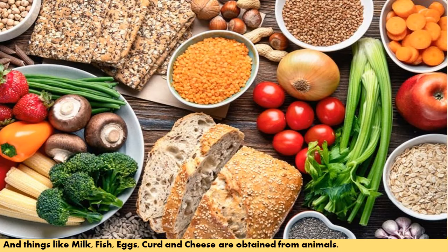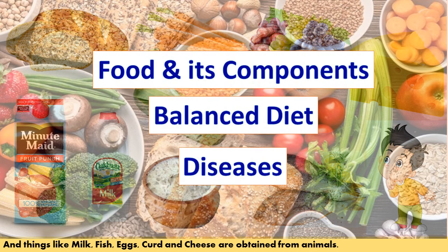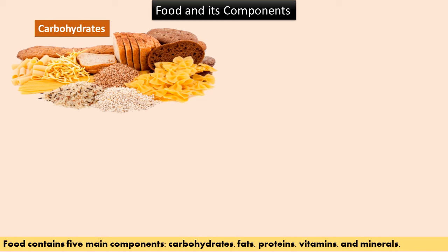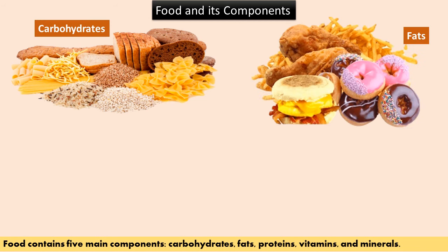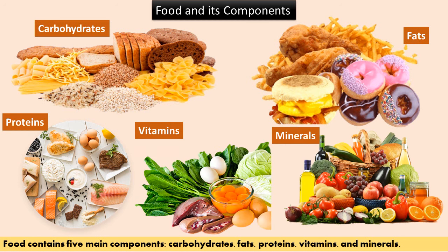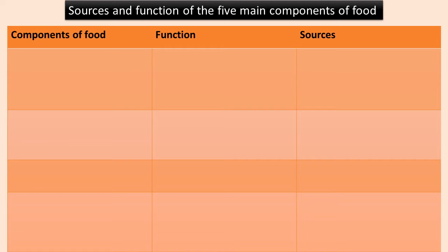We should eat a variety of foods to remain healthy. In this chapter you will learn about food and its components, balanced diet, and diseases. Food contains five main components: carbohydrates, fats, proteins, vitamins, and minerals. Our body needs all these components in adequate amounts to remain healthy.